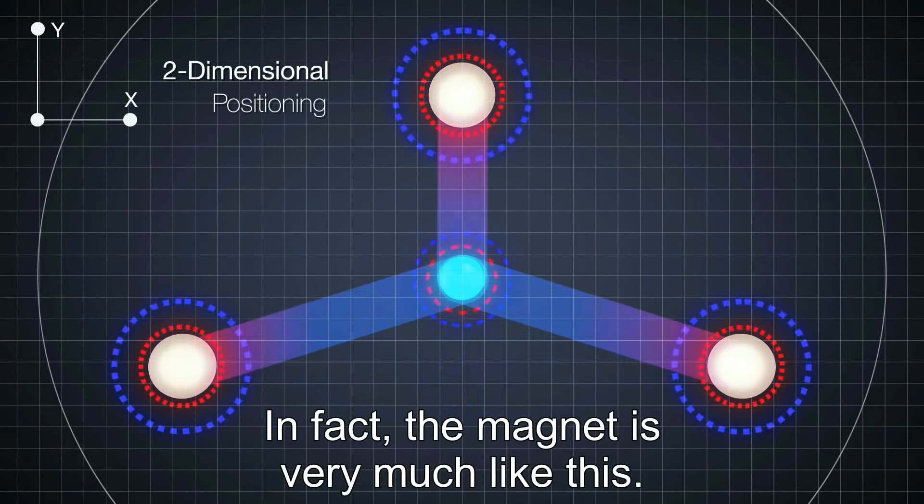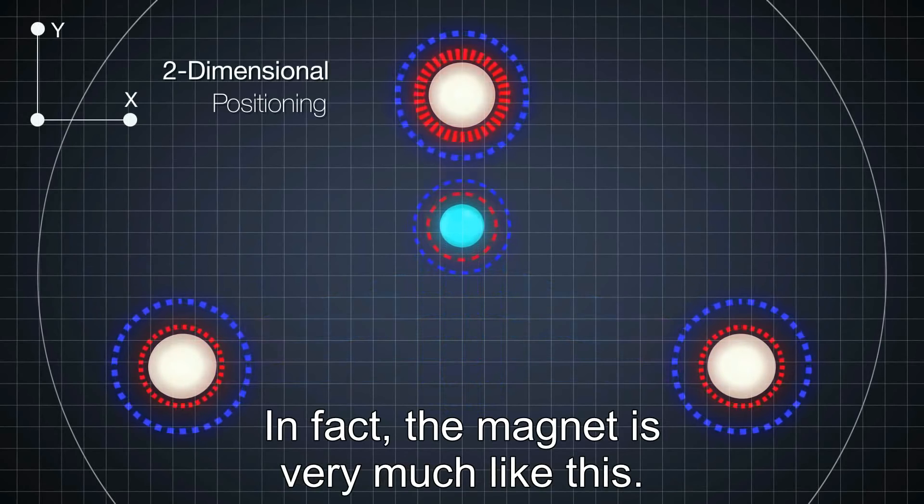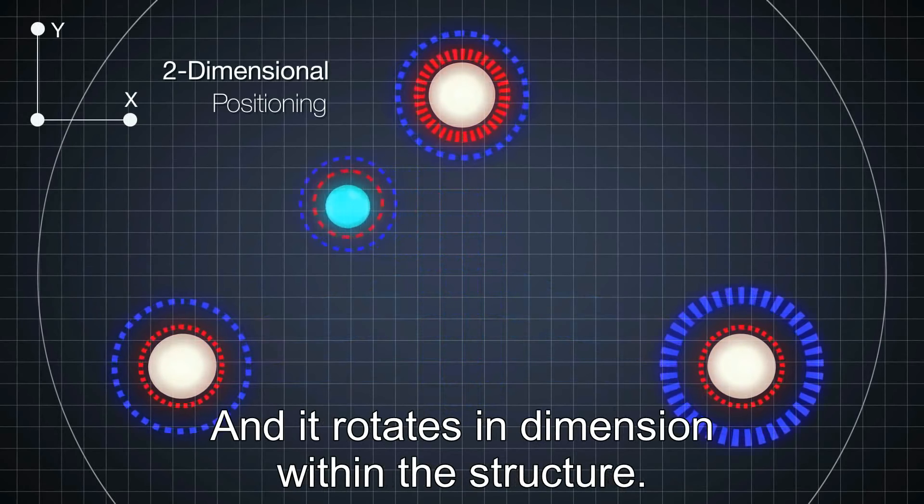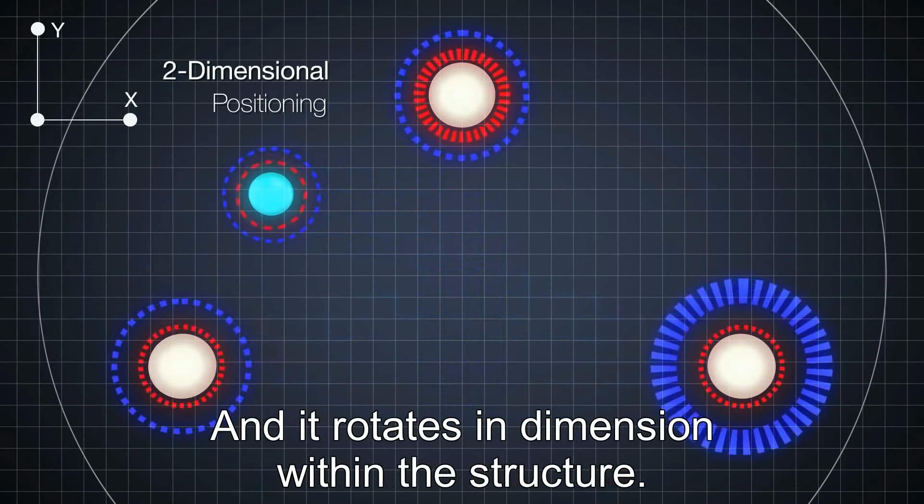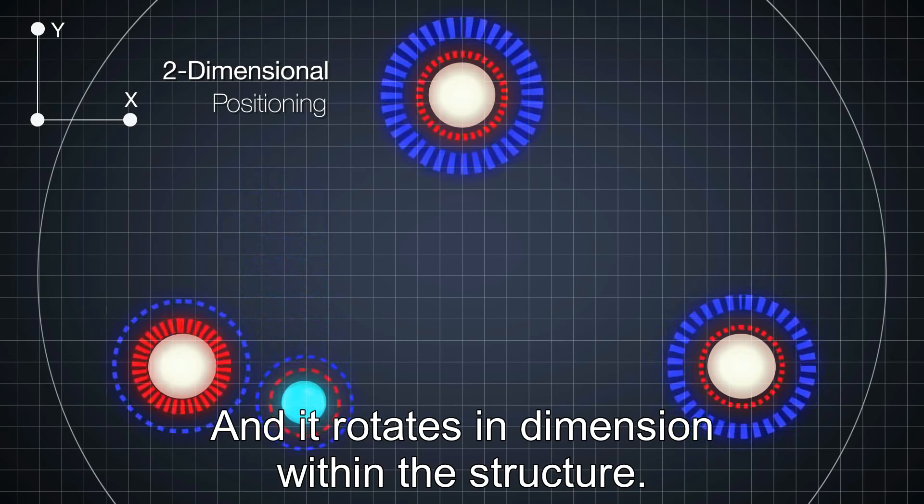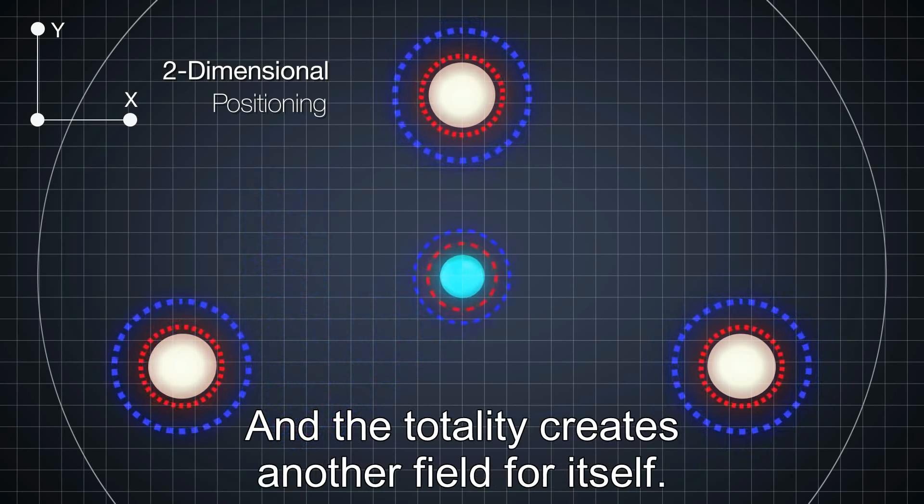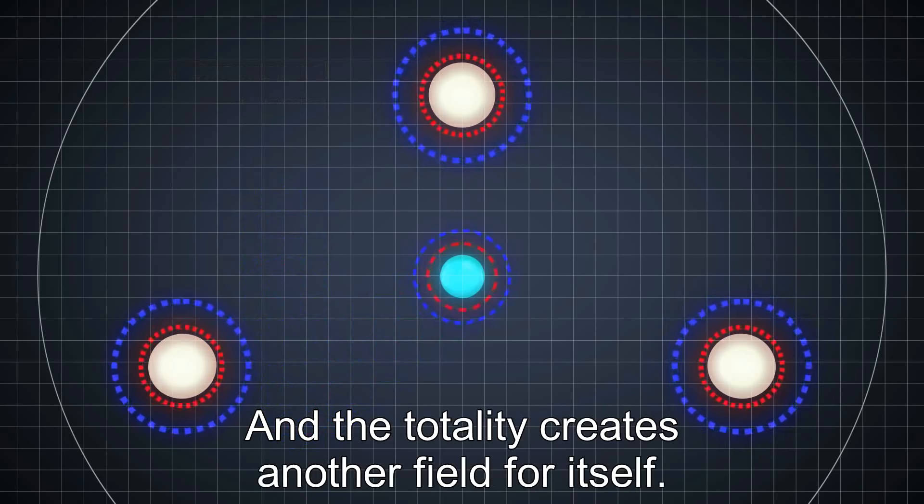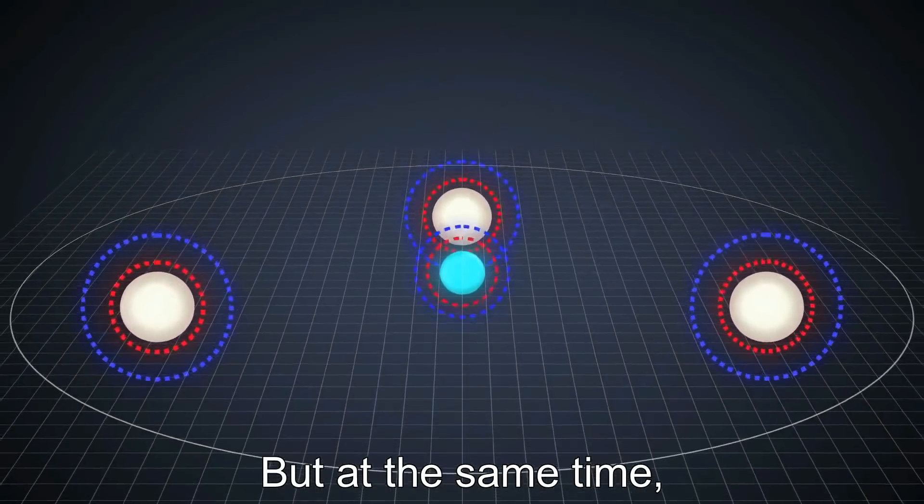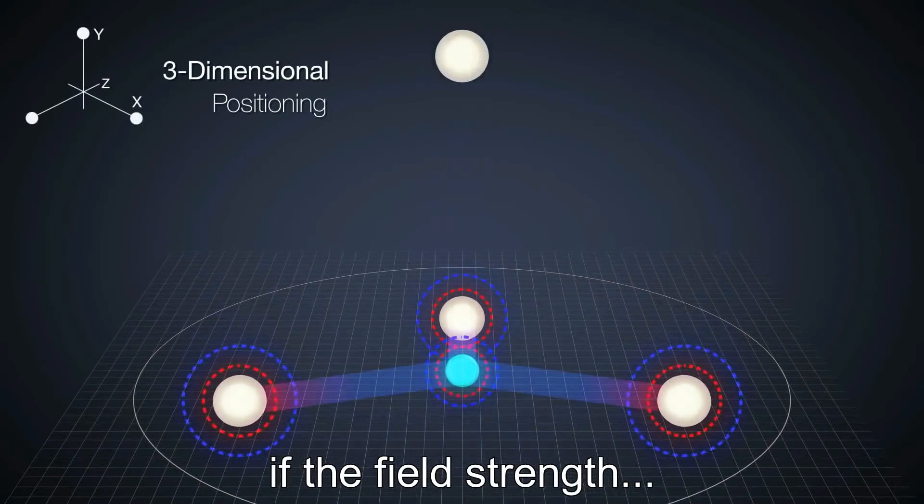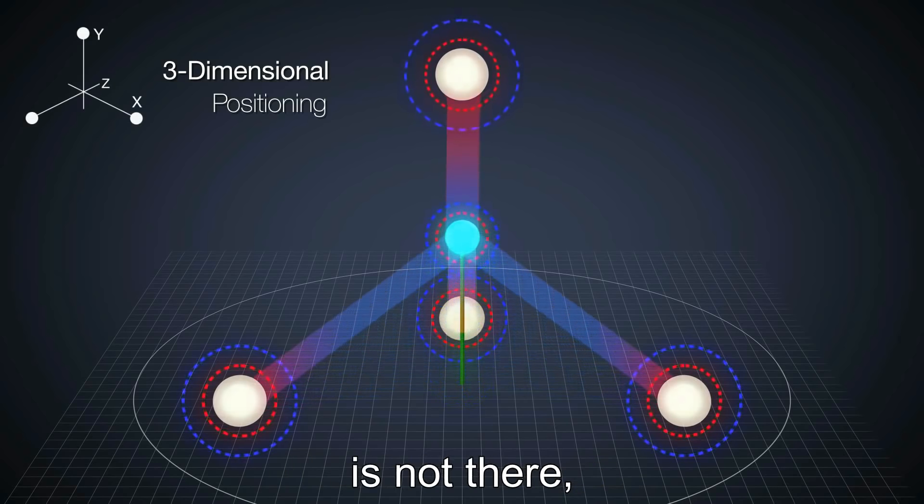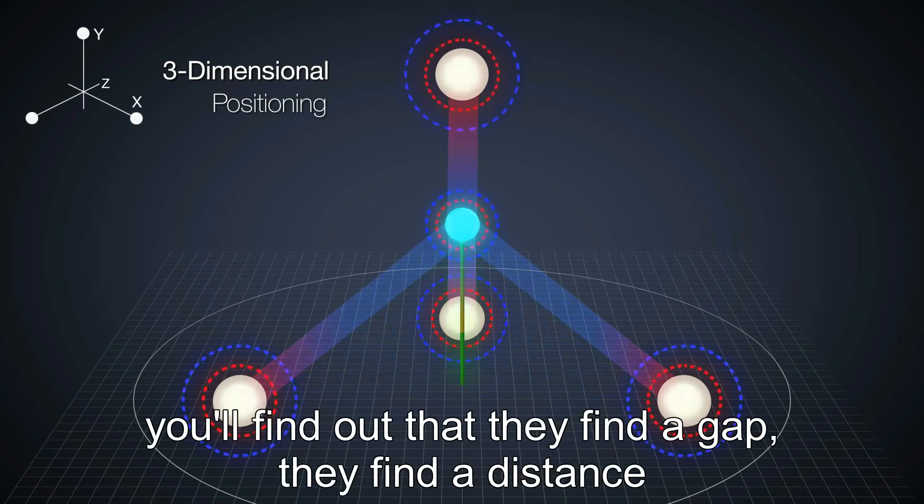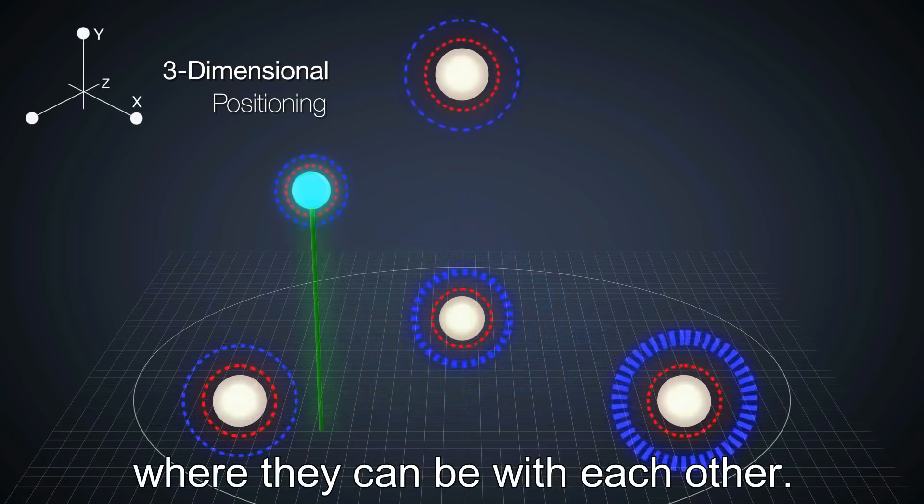In fact, the magnet is very much like this. And it rotates in dimension within the structure, and the totality creates another field for itself. But at the same time, if the field of strength is not there, you'll find out they find a gap, they find a distance where they can be with each other.